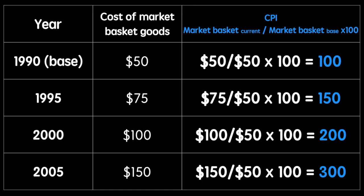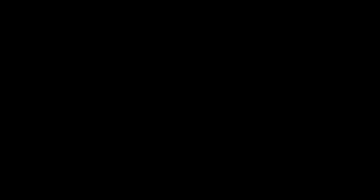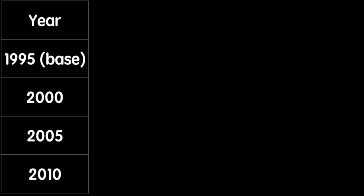By looking at the CPI over years we can calculate the inflation rate. In this table we'll lay out the same years and the CPI we calculated for each year. As we're always comparing to the base year, we'll also calculate inflation for each year compared to the base year of 1995.